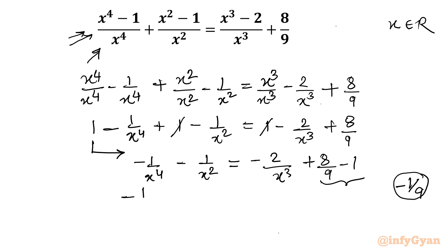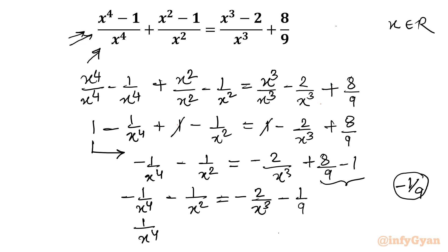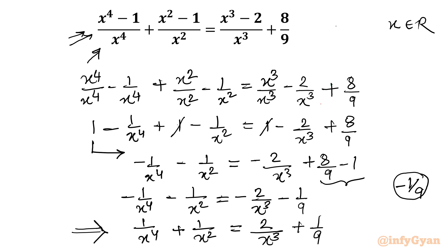So every term has a negative sign: minus 1 over x⁴ minus 1 over x² equals minus 2 over x³ minus 1 over 9. Let us multiply through by minus 1, giving us a nicer equation: 1 over x⁴ plus 1 over x² equals 2 over x³ plus 1 over 9.